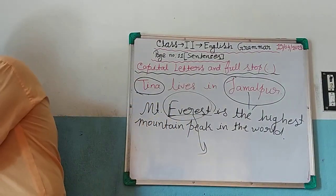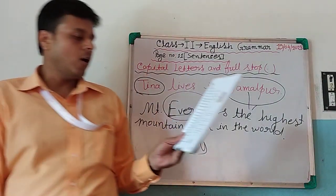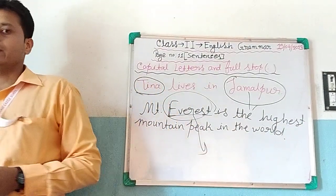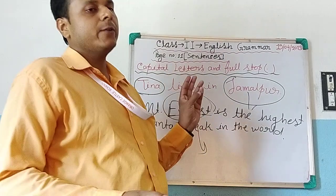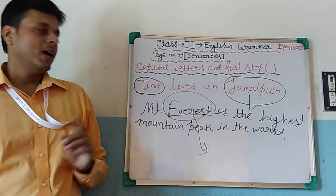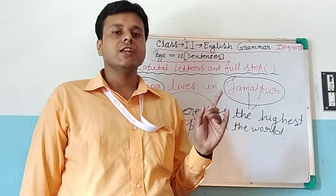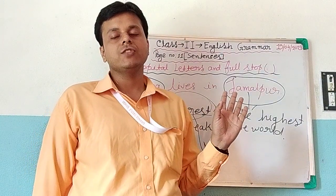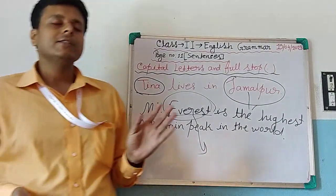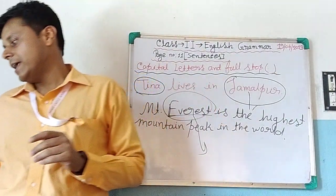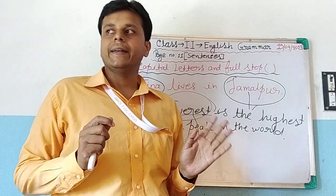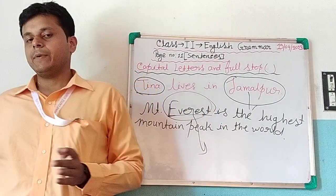The next rule is for the names of days of the week and months of the year. We always write Sunday, Monday, Tuesday, Wednesday, Thursday, Friday with a capital letter. And we always write the names of the twelve months — January, February through December — always with a capital letter. So remember, the names of months and the names of days should always be written in capital letters.